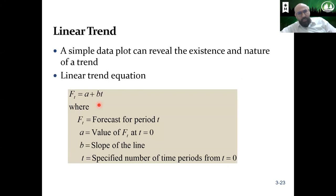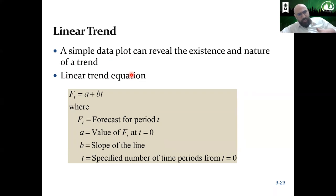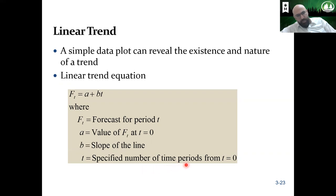The next forecasting technique is the linear trend. A simple data plot can reveal the existence and nature of a trend. You create the data and then fit a linear line to show the trend. This gives the traditional equation: Y = A + B × T, where F is the forecast for period T, A is the value of F at time zero, B is the slope, and T is the specific number of time periods from T-zero.